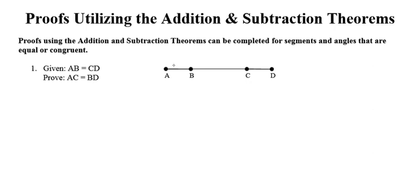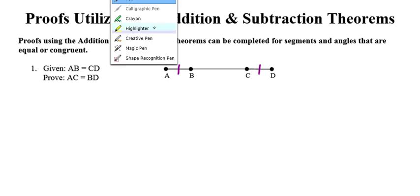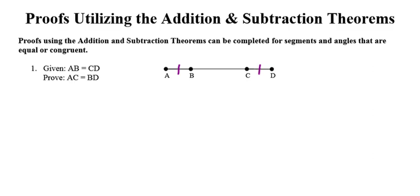As we do for all of our proofs, I'm going to go ahead and mark these two in the picture. What we want to show is that the distance between A and C — represented by the yellow segment in my picture — is equal to the distance between B and D. One of the things that's tricky for kids sometimes is they're not quite sure whether they want to use addition or subtraction.